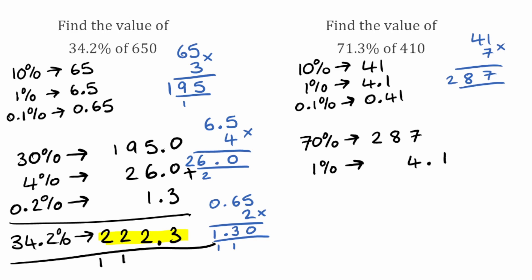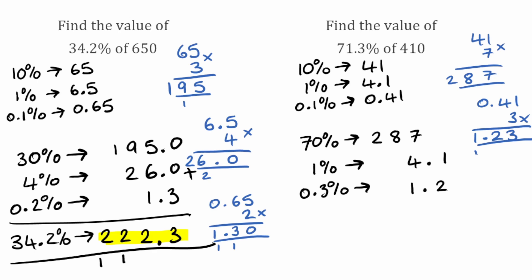Then finally in our tenths column we need 0.3%. To find that, we take our 0.1% value of 0.41 and multiply by 3. So 3 times 1 is 3; 3 times 4 is 12, so 2 carry 1; 3 times 0 is 0, add the carried 1 gives us 1. That would be equivalent to 1.23.